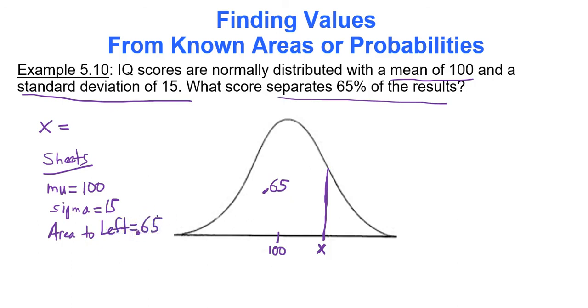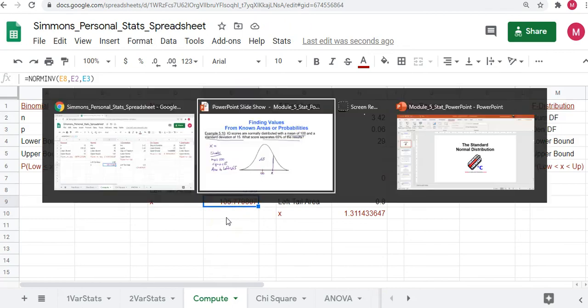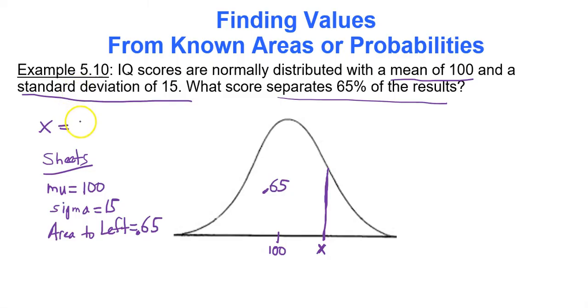You will type these three magic numbers into Google Sheets. And it will do all of the hard work for you. 100, 15, area to the left or left-tailed area, 0.65. 105.78. 105.78. Two decimal places for data values. 105.78. That is the IQ score that separates 65% of the results.